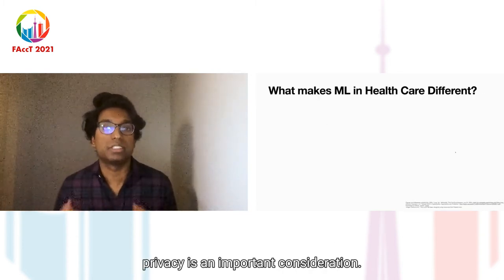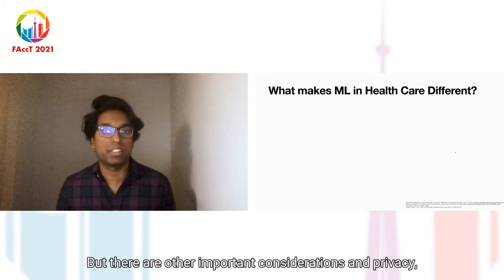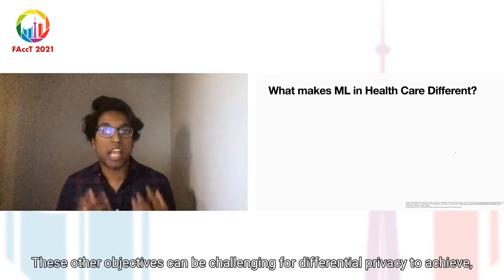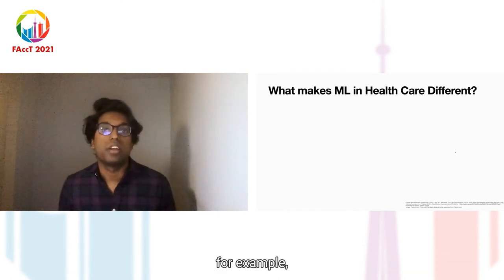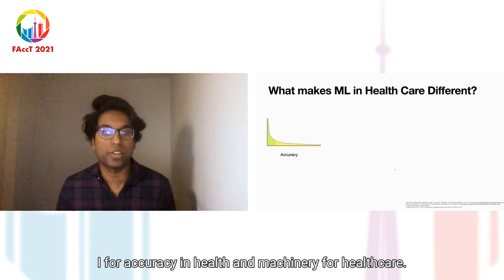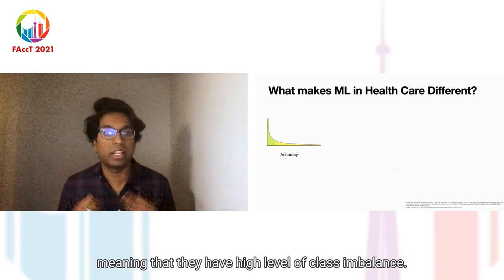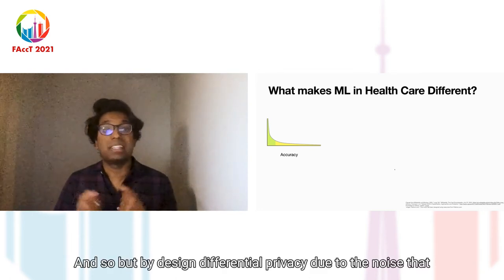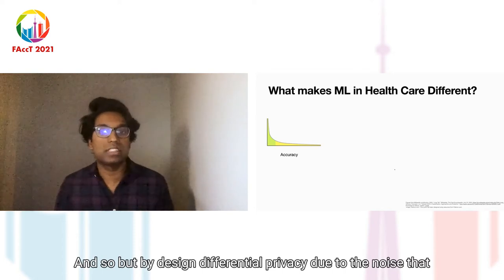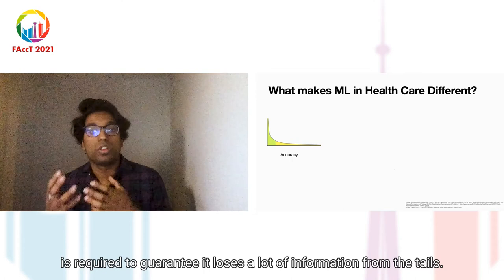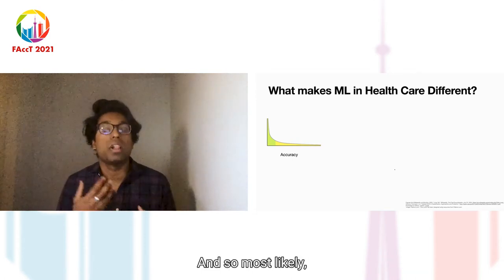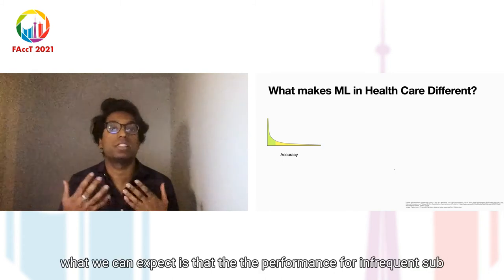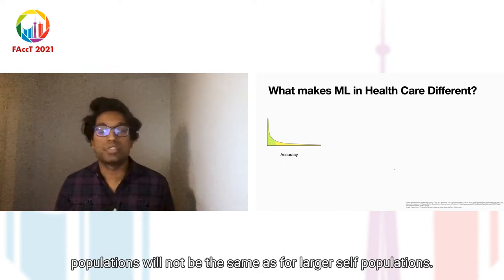In healthcare, privacy is an important consideration, but there are other important considerations such as accuracy, robustness, and fairness. These other objectives can be challenging for differential privacy to achieve. For accuracy, healthcare datasets are often long-tailed, meaning they have a high level of class imbalance. By design, differential privacy — due to the noise required to guarantee it — loses a lot of information from the tails. Most likely, we can expect that performance for infrequent subpopulations will not be the same as for larger subpopulations.